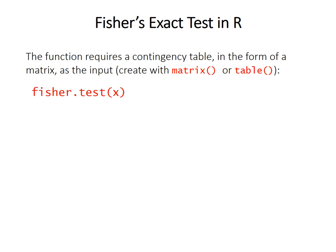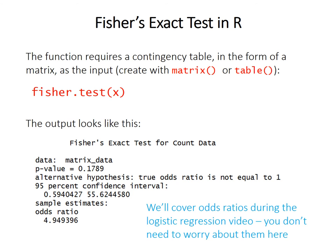The R function is called fisher.test and requires a single contingency table as input. You'll typically have to make that table yourself using either the matrix function or the table function. The output, at least for a 2x2 contingency table, includes a p-value as the key thing to focus on — for now you can ignore the odds ratio statistics. The 95% confidence interval given is on the odds ratio, which will be covered in the logistic regression video. You can also perform Fisher's exact test on contingency tables larger than 2x2, but in that case the R results won't give odds ratio details at all.